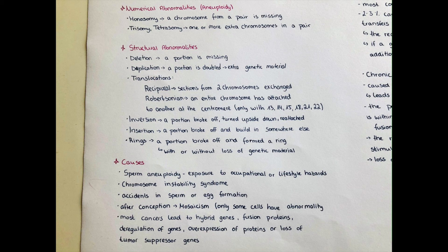Inversion is where a portion of the chromosome has broken off, turned upside down, and has been reattached. Insertion is where a portion has broken off and is built in at some other place in another chromosome. And ring formation is where a portion has broken off and formed a ring. This can occur either with or without loss of genetic material.